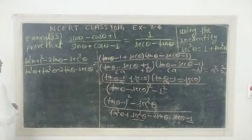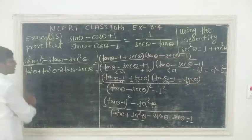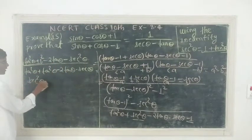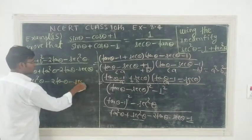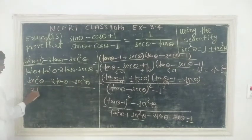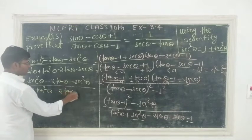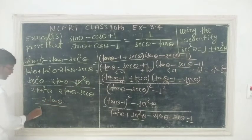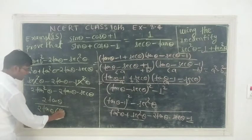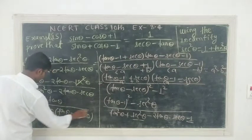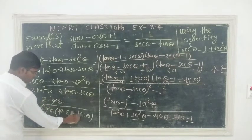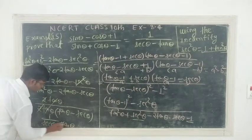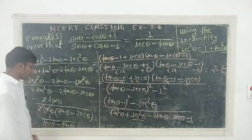Numerator is 2 tan squared theta minus 2 tan theta into sec theta. In the denominator, take 2 tan theta common. So this gives 2 tan theta times (tan theta minus sec theta). Cancelling 2 tan theta from numerator and denominator, the minus flips the expression, giving 1 divided by sec theta minus tan theta. Hence proved.